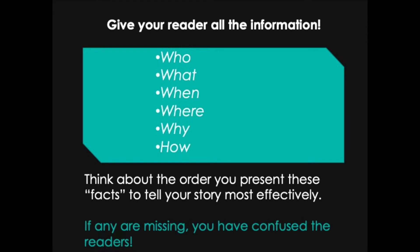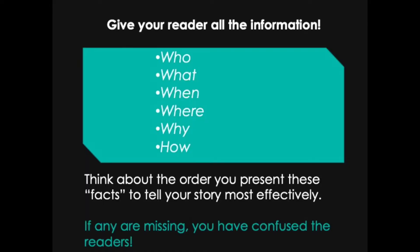Think about writing your paper as if you are a journalist, asking: who, what, when, where, why, and how? Think about whether you're presenting all of that information. The "who" may not refer to people — you might treat your research subjects as entities even if they're not. For example, if you're studying iron deficiency in plants, you might treat iron and plants as the "who" part of the equation. Think about the order you present these facts to tell your story. Make sure they're all there, because if any are missing, that's going to lead to confusion and readers won't follow your paper as well as they could.